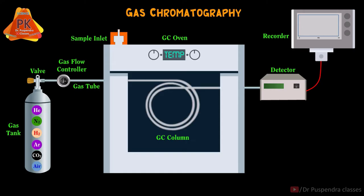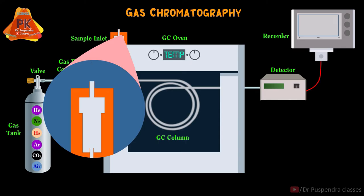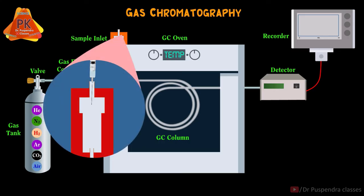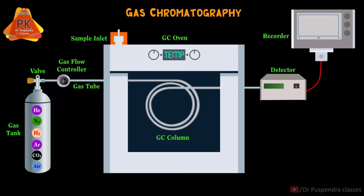After that we will inject the sample through the sample inlet. If the sample is gas, then a gas syringe will be used. If the sample is solid, it will be dissolved in a suitable liquid and converted into a liquid sample. If the sample is liquid, we will inject it through a micro syringe at the sample inlet. If a gas sample is injected, it will directly go towards the column along with the mobile phase for elution. But if we are injecting a liquid sample, it will be converted into gaseous form due to heating created by the heated metal block present in the sample inlet. The vaporized liquid sample will then move towards the capillary column.